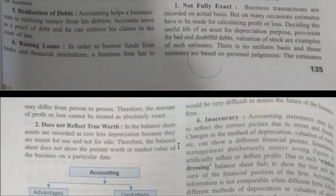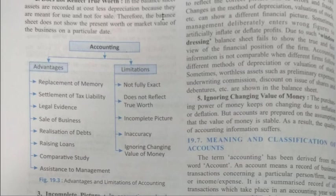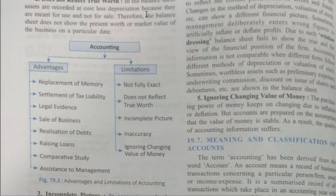The second limitation is that accounting does not reflect the true worth. In the balance sheet, assets are recorded at cost less depreciation because they are meant for use and not for sale. Depreciation is calculated annually, not day by day. Therefore, the balance sheet does not show the present worth or market value of the business on a particular date.